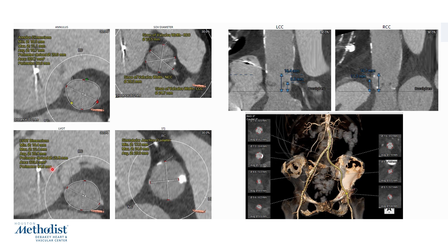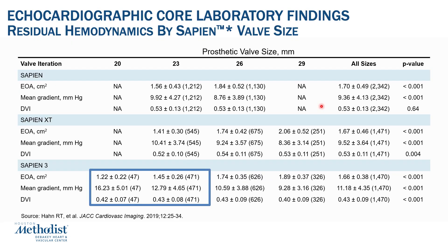Here are the LVOT measurements and the STJ measurements. The dimensions are suitable for a transfemoral TAVR. This patient clearly has a small annulus, a small sinus of Valsalva, and a left coronary height that is low. She's 87 years old and a high surgical risk patient, so the question is, what do we do?